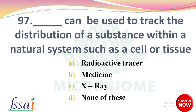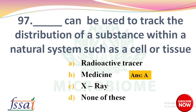Dash can be used to track the distribution of a substance within a natural system such as a cell or tissue — options: radioactive tracer, medicine, X-ray, none of these. The right answer: option A, radioactive tracer.